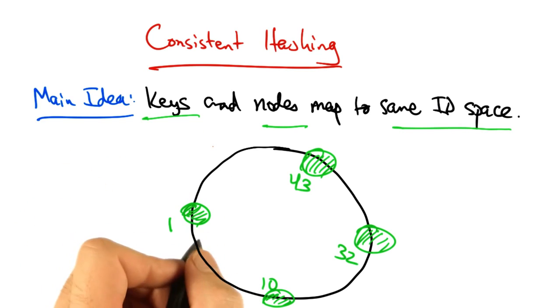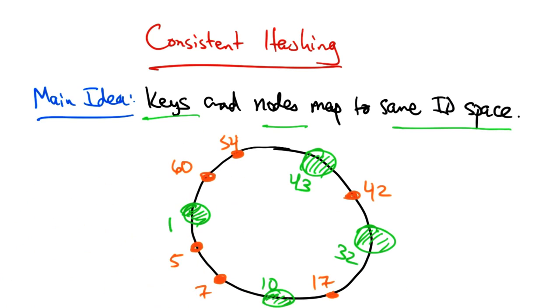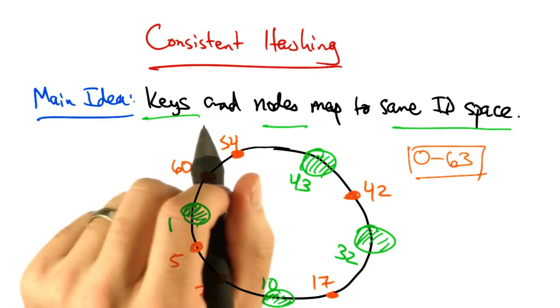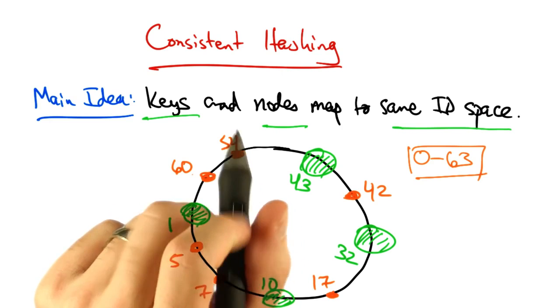The keys should also map to the ID space. For example, let's suppose we have a 6-bit ID space, so IDs might range from 0 to 63. You can see that the nodes have IDs, and the keys also have IDs in the same space.